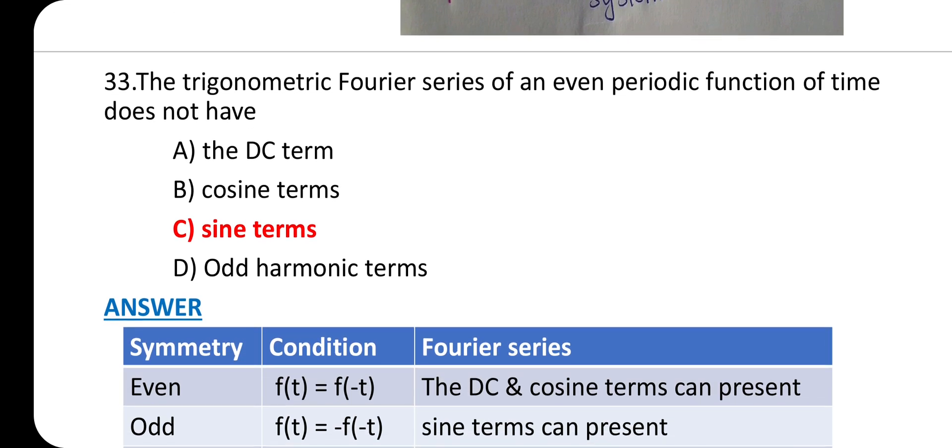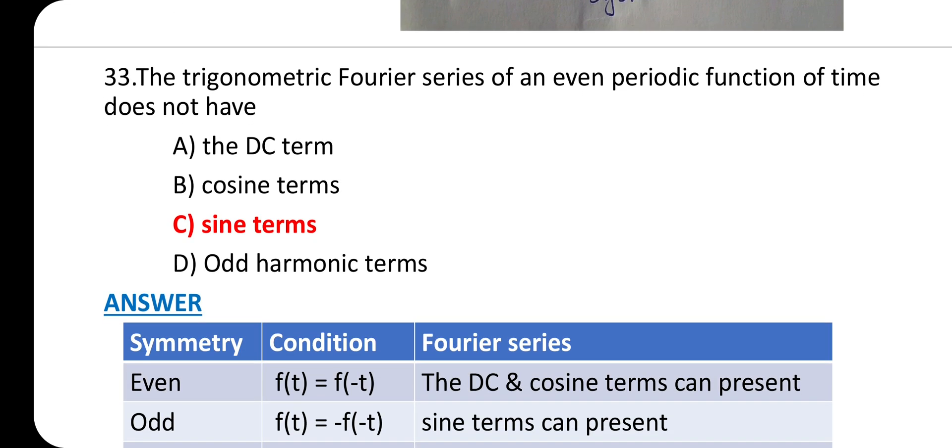Question 33: The trigonometric Fourier series of an even periodic function of time does not have? Answer is option C: sine terms.